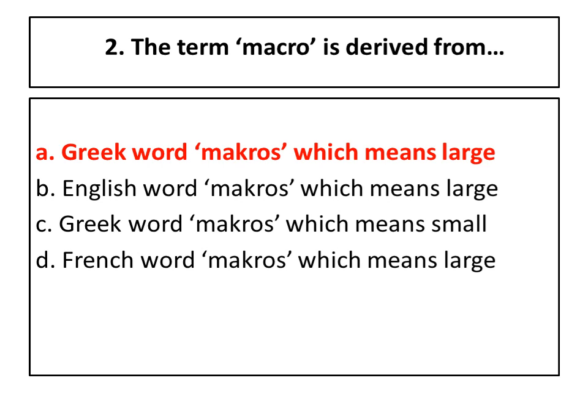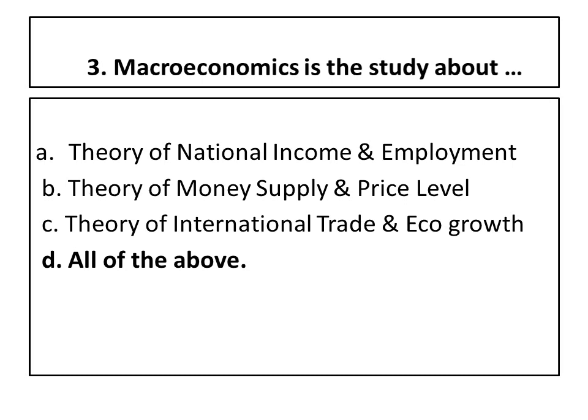We studied in the previous question that macroeconomics is the study of aggregates and groups, so it obviously means large. Third question: macroeconomics is the study about — A) theory of national income and employment, B) theory of money supply and price level, C) theory of international trade and economic growth, D) all of these. The right answer is all of the above, because in macroeconomics we study national income, employment, supply and price level, and even international trade, exports and imports.